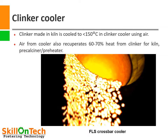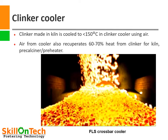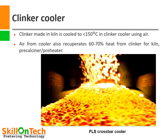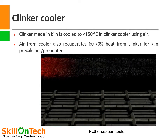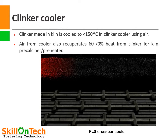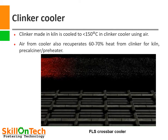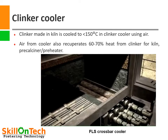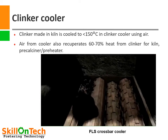Clinker made in the kiln is very hot and needs to be cooled before it can be used. Coolers are installed just after the kiln outlet, where a series of fans cool the clinker from compartments below the cooler grate bars. Air also serves to recuperate up to 70% of heat from the hot clinker. Air comes from compartments below, taking heat away from the clinker bed as it is moved forward using cross bars. The bigger boulders in the clinker bed are crushed by crushers so that they can be transported and used later.